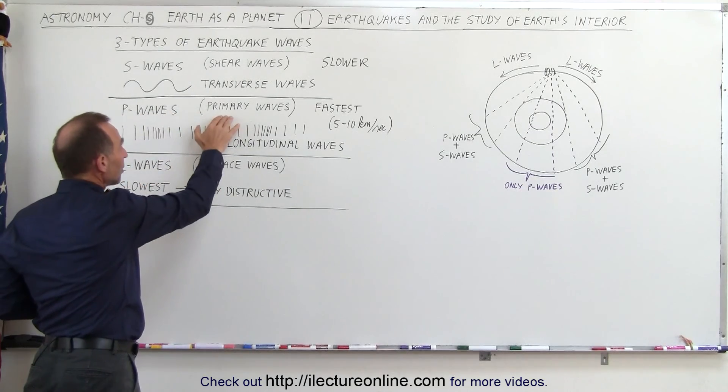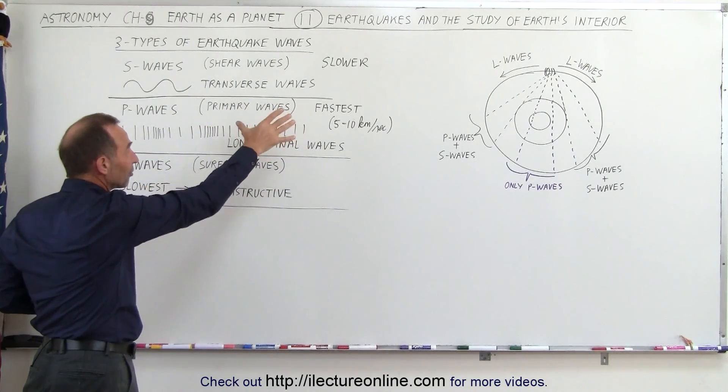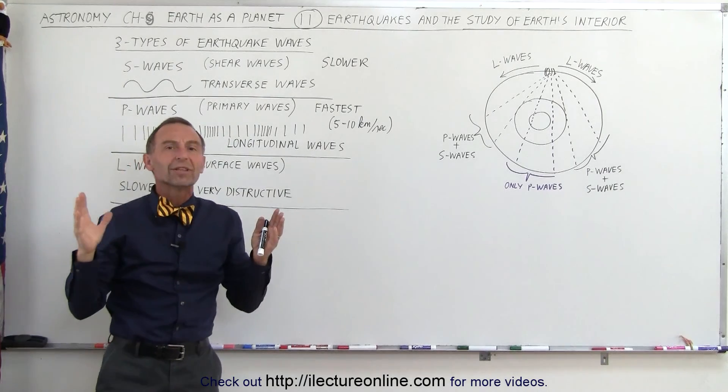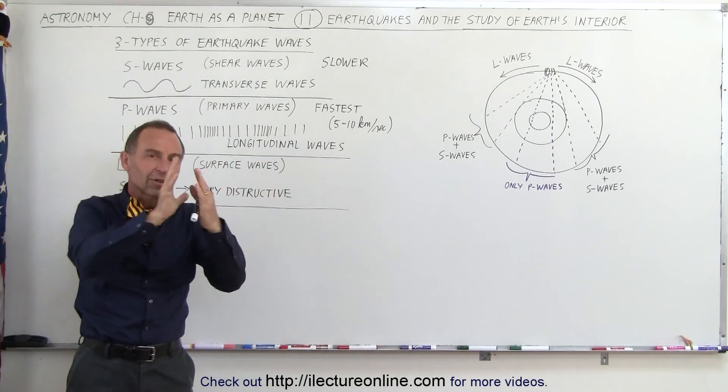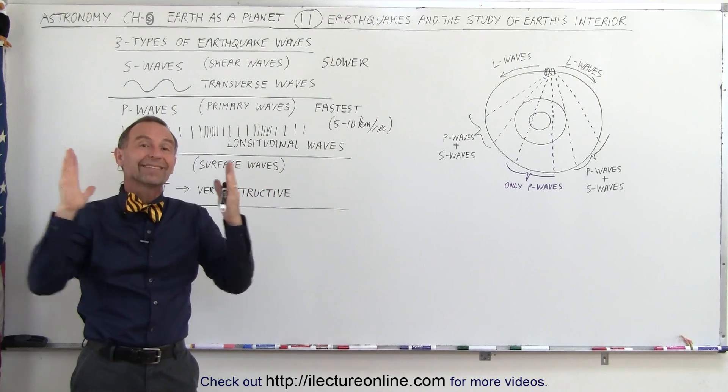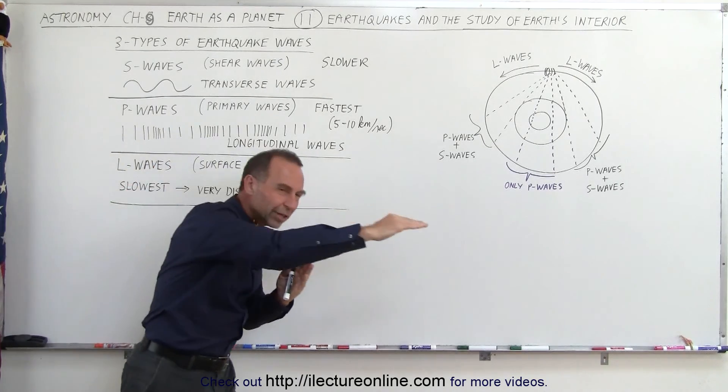P waves, or primary waves, which are by the way the fastest of all the earthquake waves, travel kind of like waves in the air. They compress the material in the same direction as the motion of the energy of the waves.